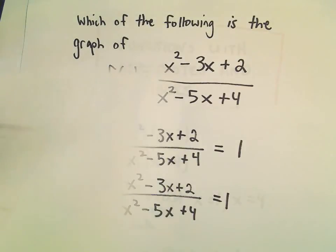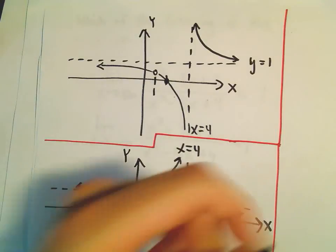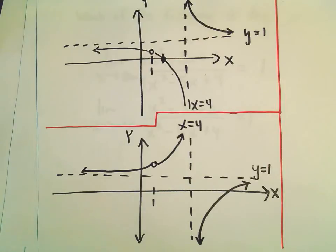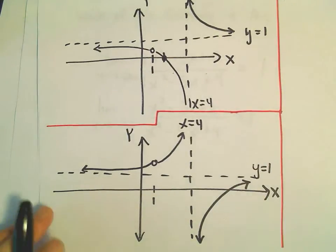So, it looks like both of our graphs here, let's go ahead and label. Both of those do have a nice little y asymptote, or, excuse me, horizontal asymptote of y equals 1.